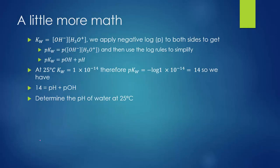Applying the log function to both sides of the Kw expression — since Kw equals the concentration of hydroxide times hydronium — we use the log product rule: log of a product equals the sum of logs. So pKw equals pOH plus pH. Since Kw is 1 times 10 to the negative 14, the negative log of Kw is 14. Therefore, 14 equals pH plus pOH. This is true for any aqueous solution at 25 degrees Celsius.